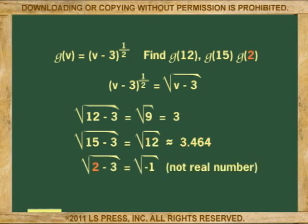Again, we substitute and we get 2 minus 3 equals negative 1. The square root of negative 1 is undefined and the answer is not a real number.